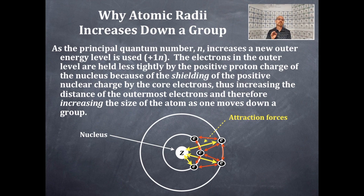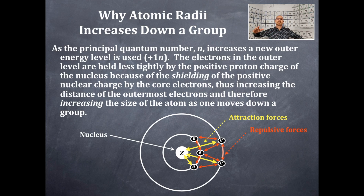These red arrows are the repulsive forces between the electrons. The electrons have the same negative charge and they are repulsed by each other. As they are repulsed by each other, that increases the size of the atom as you move down a group.